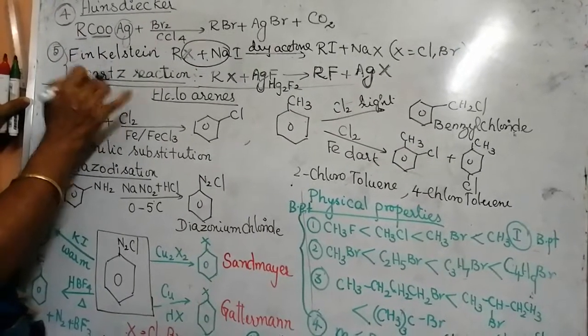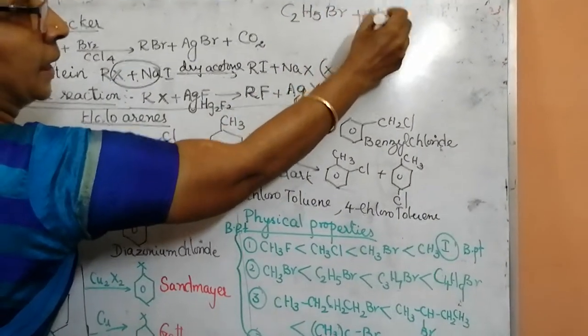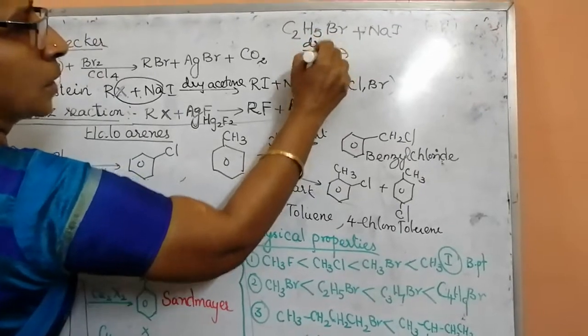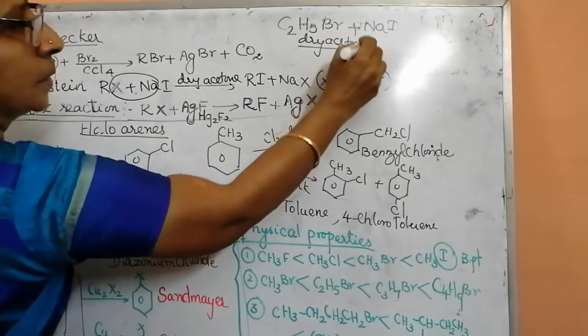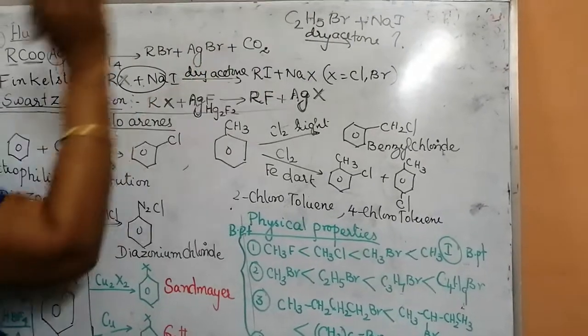Question will be asked like this: C2H5Br plus NaI in dry acetone. What is the product? So you should know it is a halogen exchange method. I will be exchanging the bromine.